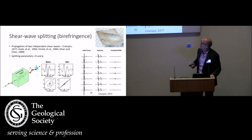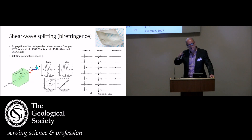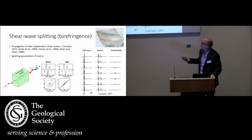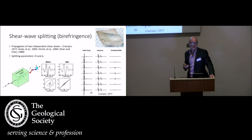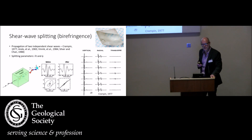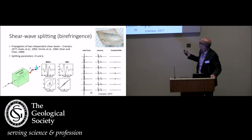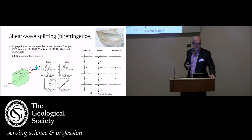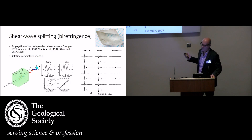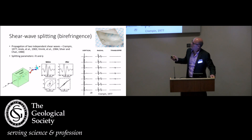One of the first people to really point this out was Stuart Crampin in a paper in 1977. He showed synthetics for a P wave incident on an anisotropic model with azimuthally varying anisotropy. In the isotropic case, you'd have a simple P wave and a P-to-S conversion on the vertical and radial components, but no energy on the transverse component. In the anisotropic case, he showed a clear transverse signal away from the symmetry axis. Silver, Chan, Vinnik, and Ando before them in Japan exploited this observation.